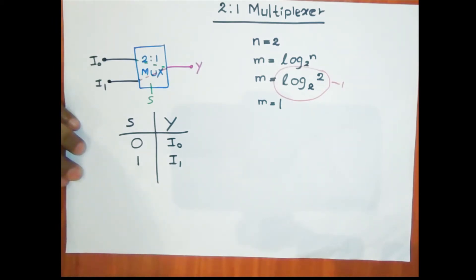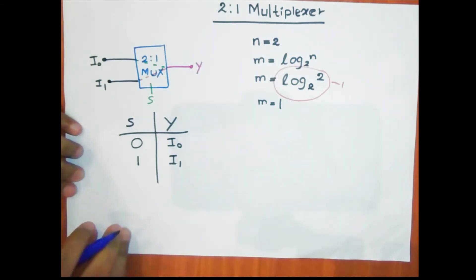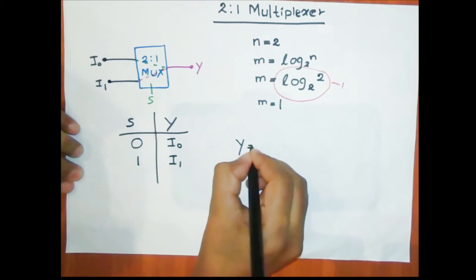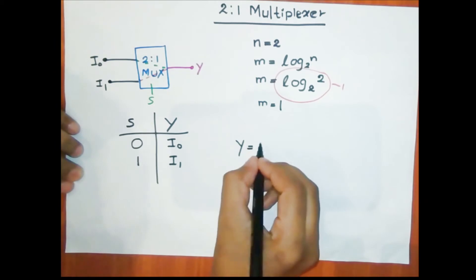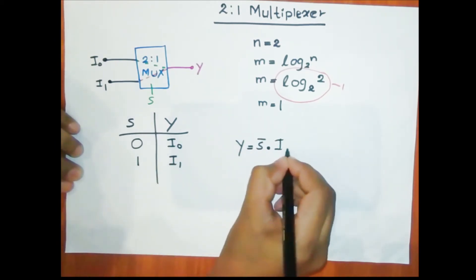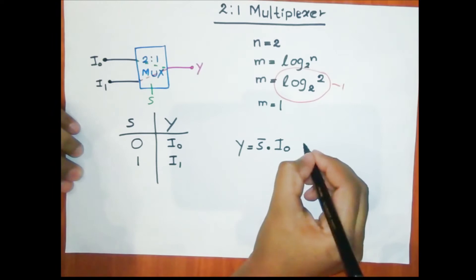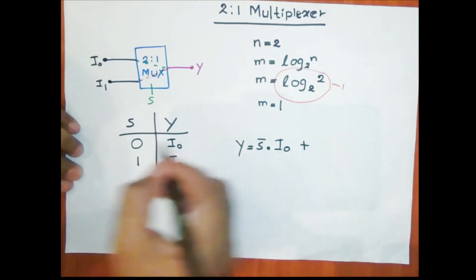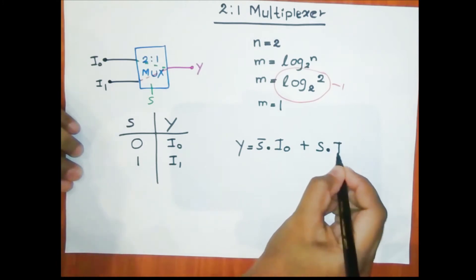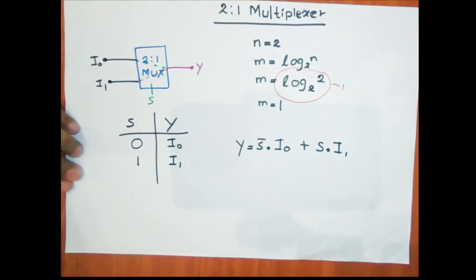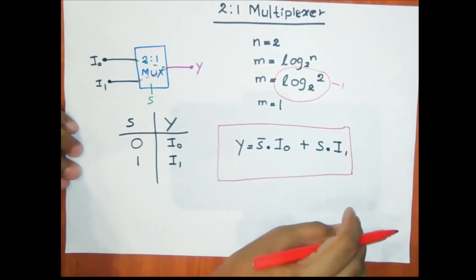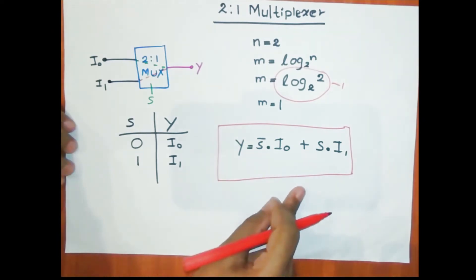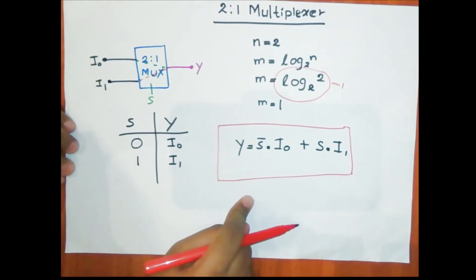From this truth table we can derive the Boolean expression for output y. From the first case, s is 0, so we get s-bar AND i0. From the second case, s is 1, so we get s AND i1. The OR of these two cases gives: y = (s-bar · i0) + (s · i1). This is the expression for the output of the 2-to-1 multiplexer, which we can use to implement it in our logic simulator.